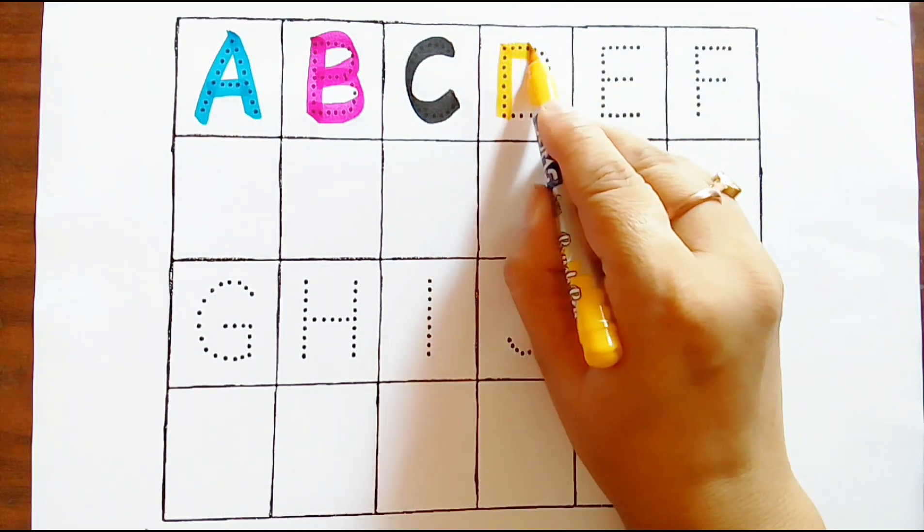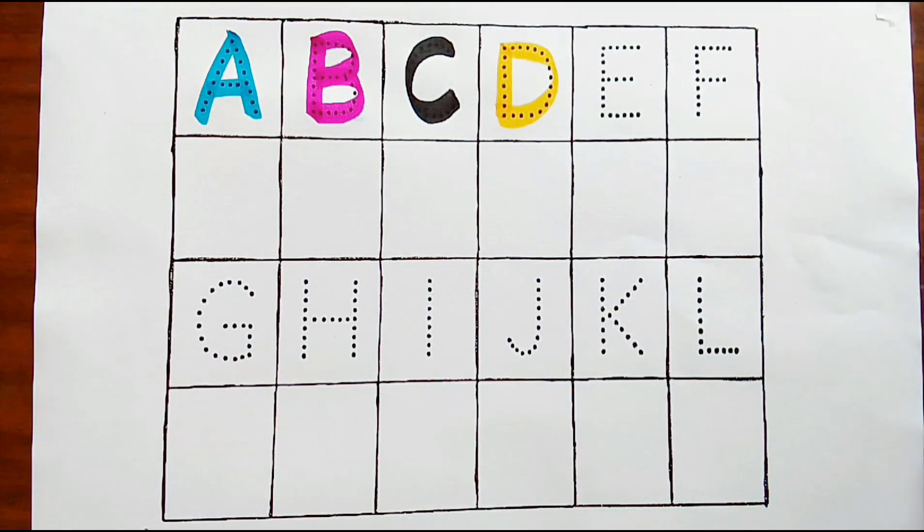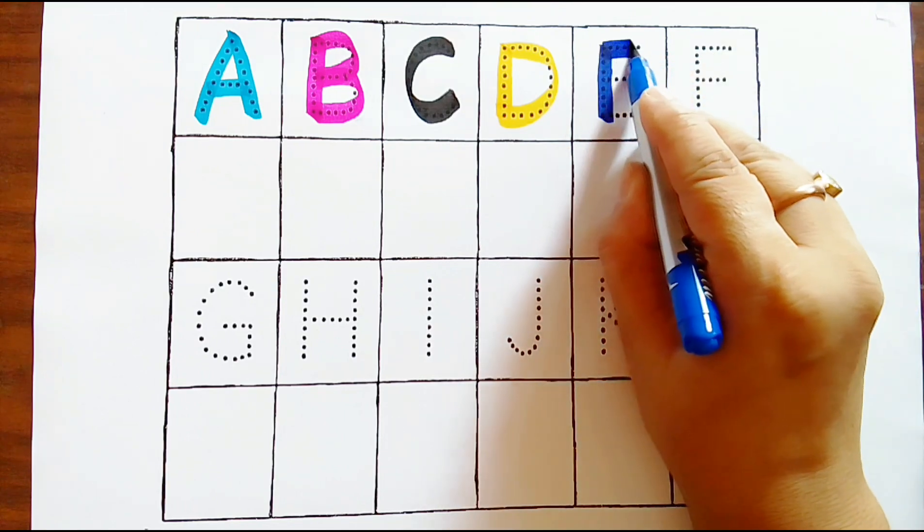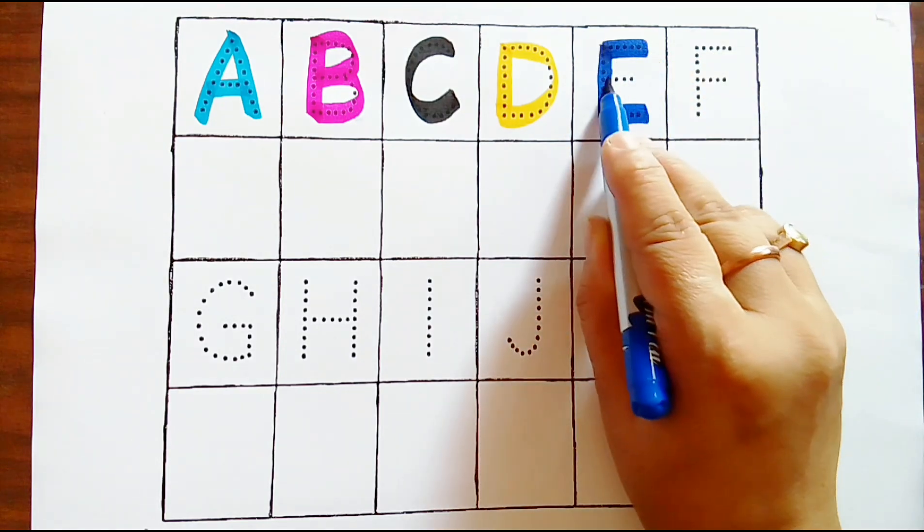Yellow color D, D for drum. Blue color E, E for eagle.